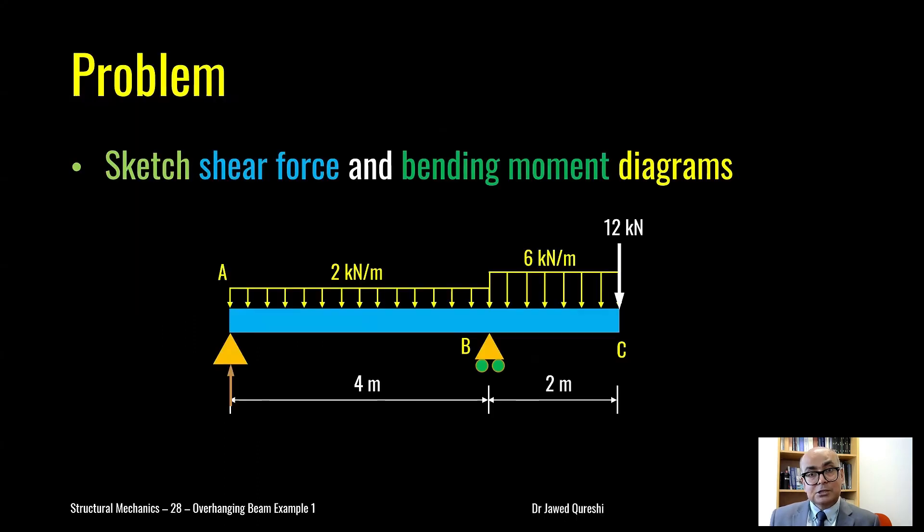By the end of this lecture, you will learn how to draw the shear force and bending moment diagrams for a beam with overhang portion. Here, loading on overhang portion is quite huge: 6 kilonewton per meter UDL and 12 kilonewton point load and on simply supported span, I just have 2 kilonewton per meter.